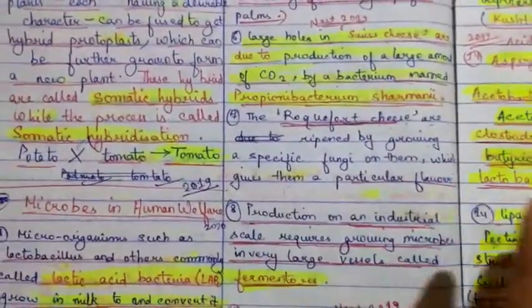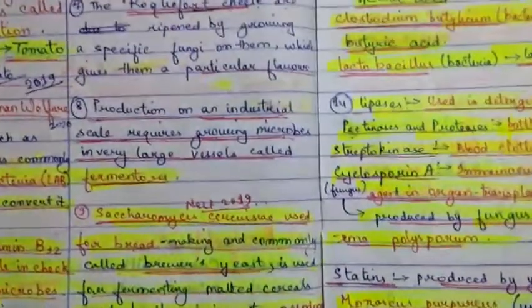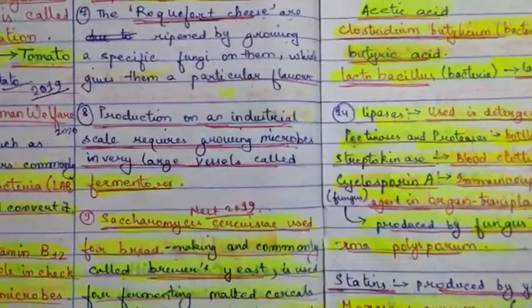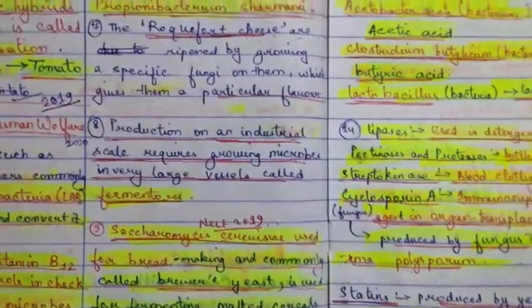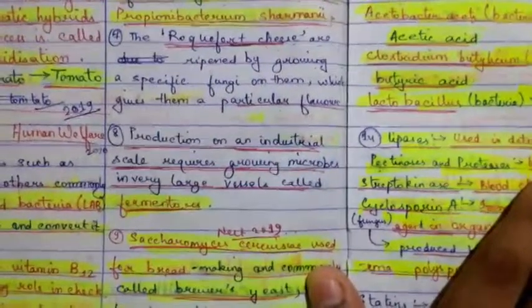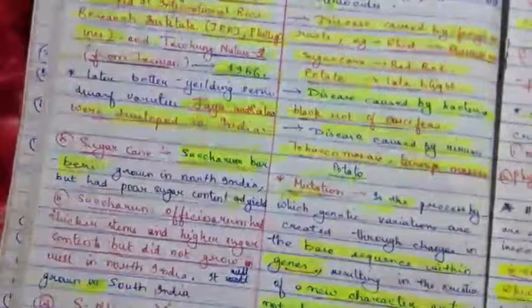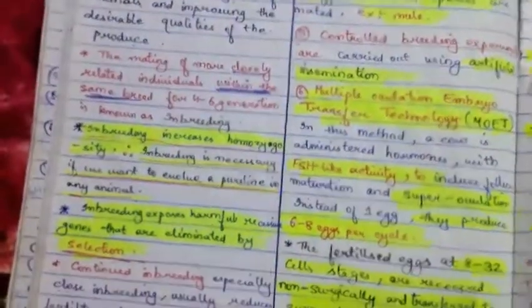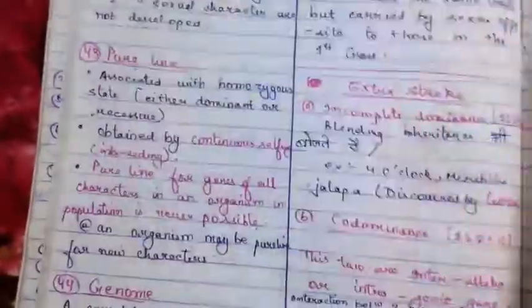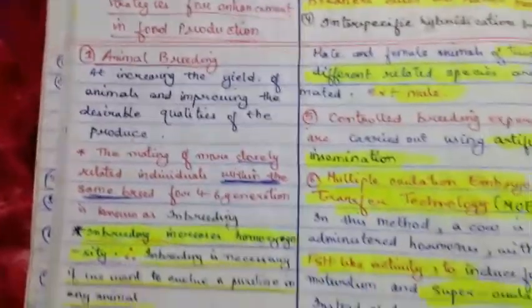There will be a question from this chapter, and questions will come from these notes. In the next class, we will complete the chapter on Strategies for Enhancement in Food Production. Then we will complete human health, then Ecology or Class 11 topics.